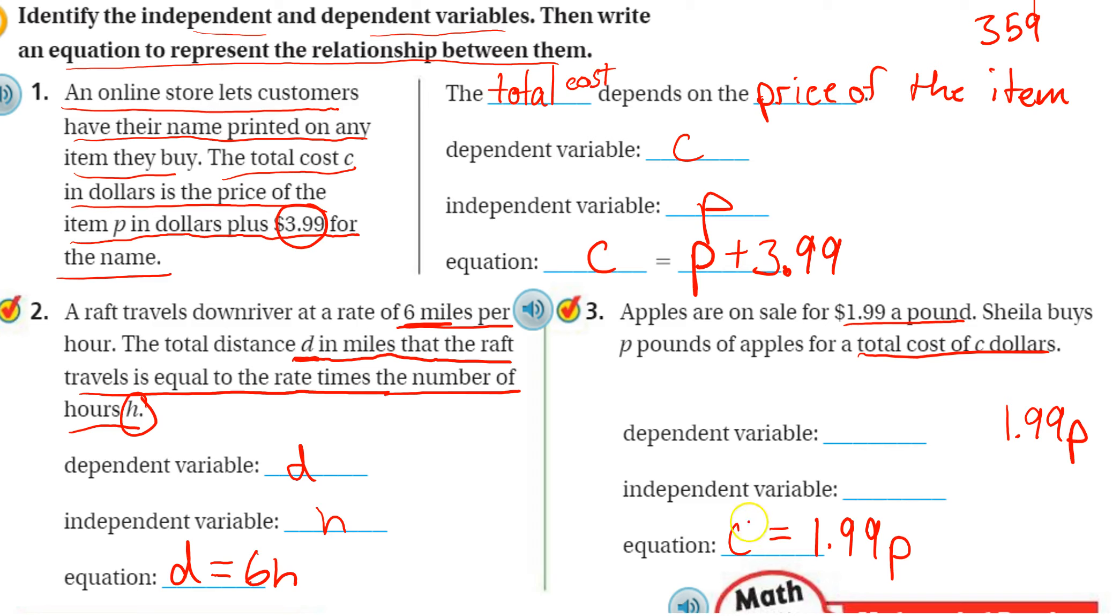So now I can see that my cost depends on how many pounds I buy. So the dependent variable in this one is my cost, and the independent variable is how many pounds I decide to buy. Okay. All right, thanks for watching, and I'll see you on the next one.